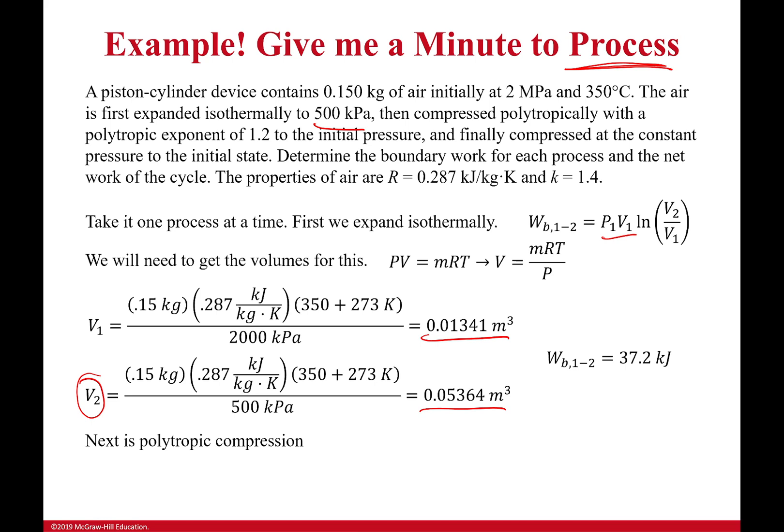The next thing is polytropic compression. So I've got this equation for polytropic compression. I need pressures and volumes again. The exponent was given, so I know that it's equal to 1.2. My question is, well, what is my pressure three? Well, that's also given in the problem statement. These are word problems, they're not always great for everybody, but it says it's going down to initial pressure. So pressure three is also going to be two megapascals.